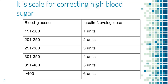The table here shows a sliding scale of one additional unit for every 50 points of blood sugar above 150. So you take one unit for blood sugar between 151 to 200, and two units for blood sugar between 201 and 250, and so on.